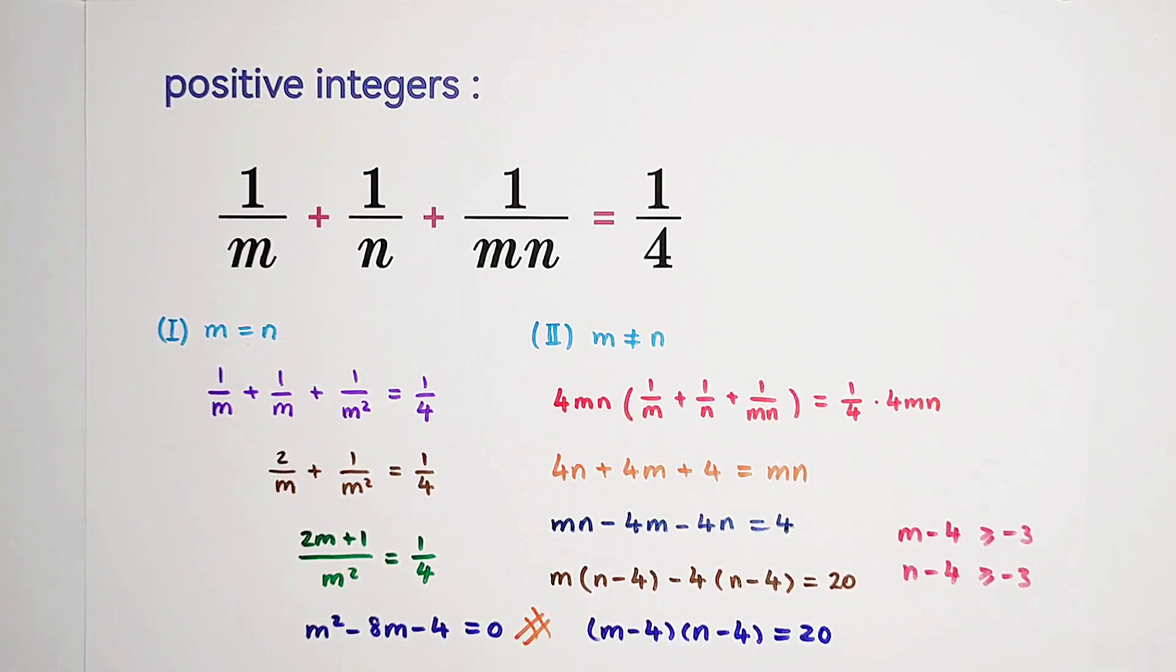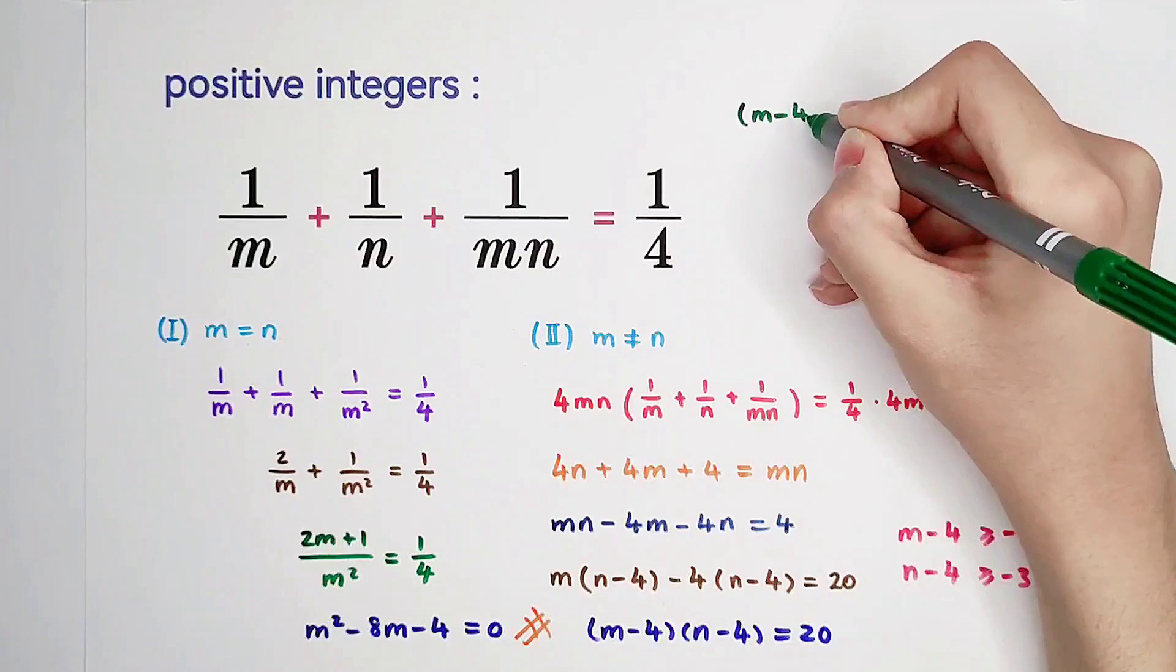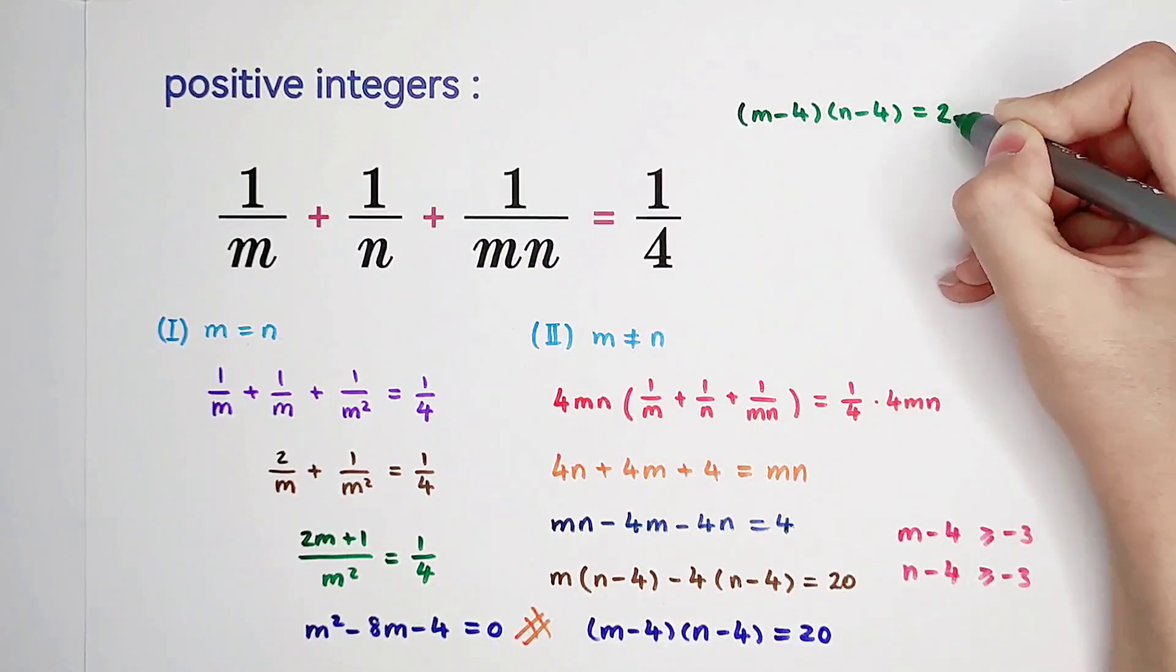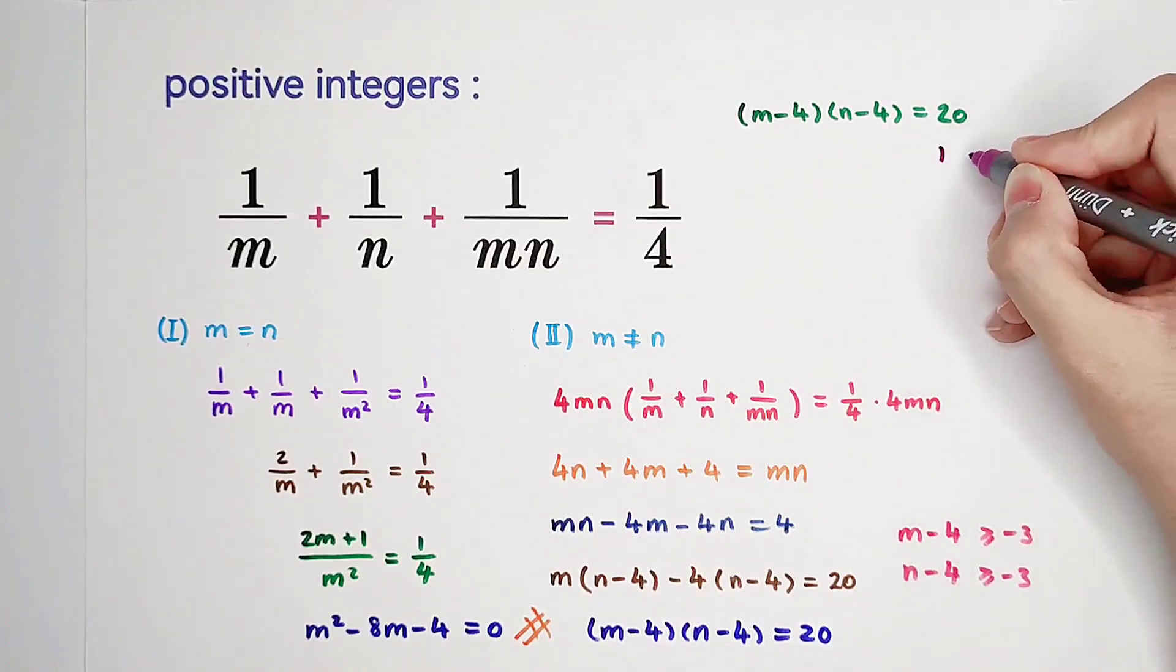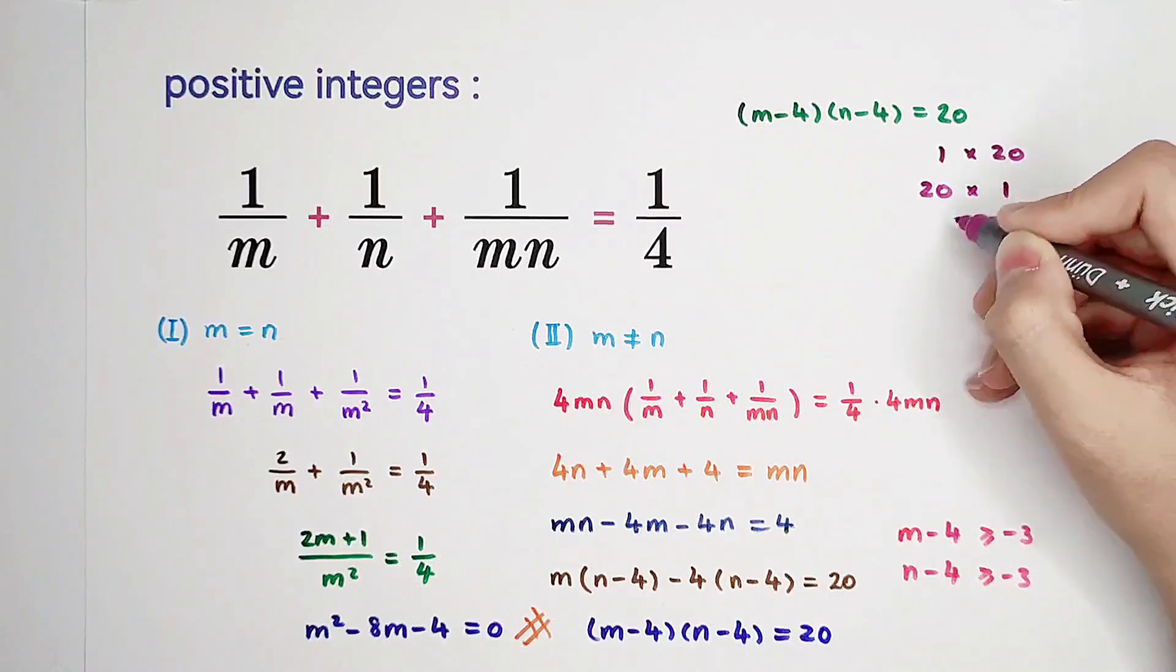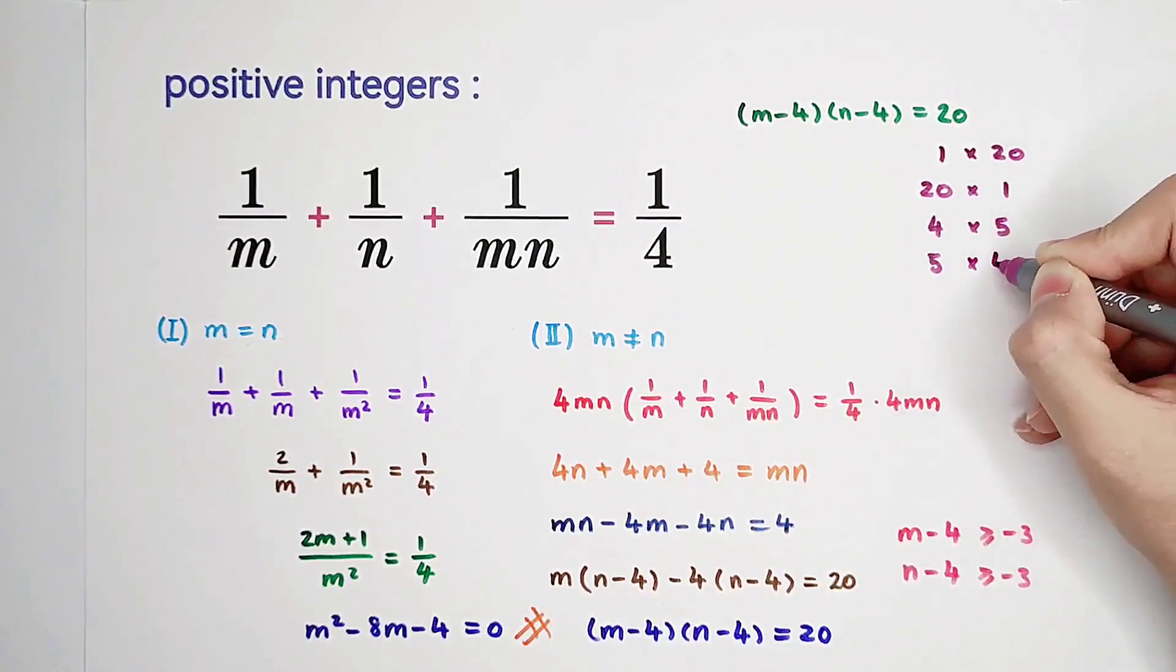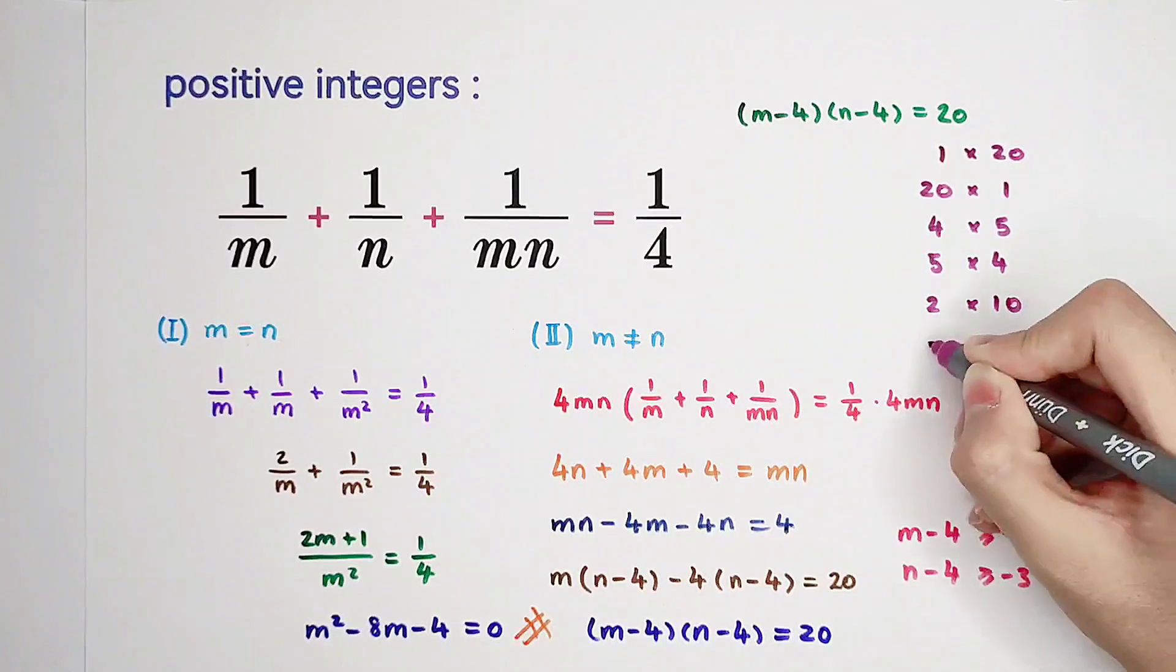20, there are actually 6 ways. So I'd like to write it here, maybe. 6 ways. 1 times 20, 20 times 1. 4 times 5, 5 times 4. 2 times 10 and 10 times 2.